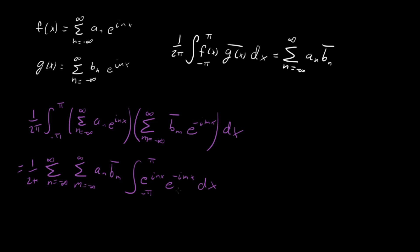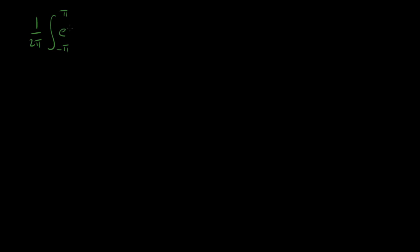Now all we have to do is evaluate this integral, which turns out to be a very important integral in all of Fourier analysis — probably one of the fundamental prerequisites for it. So let's actually integrate: 1 over 2π, integral from minus π to π of e^(inx) times e^(-imx) dx. Combining the exponentials first, we get e^(i(n−m)x) dx.